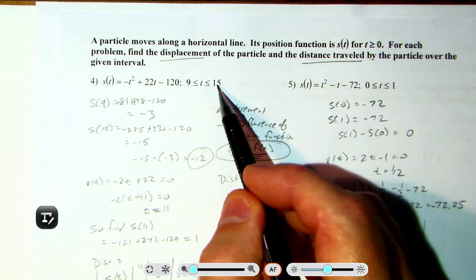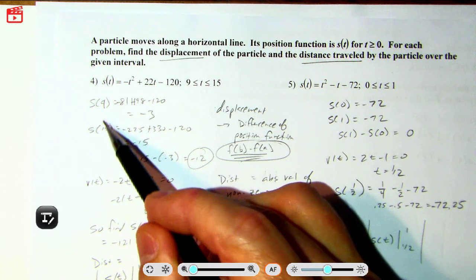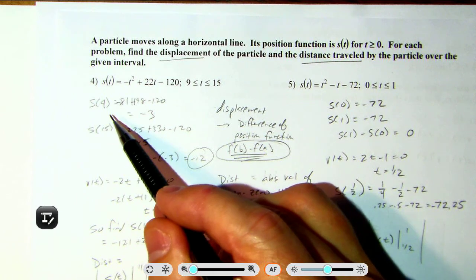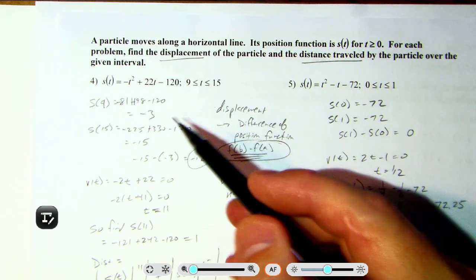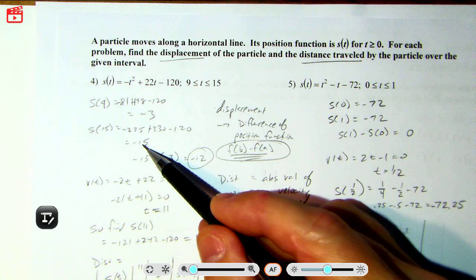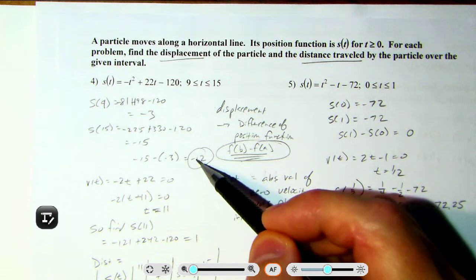Okay, so let's find out from 9 to 15 what's the position of each of those. At 9 and 15, you just plug in 9 and 15 into the function and find out it's negative 15 minus negative 3, which is negative 12.